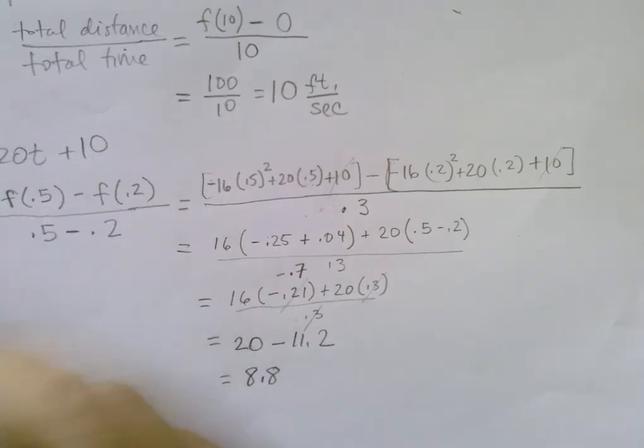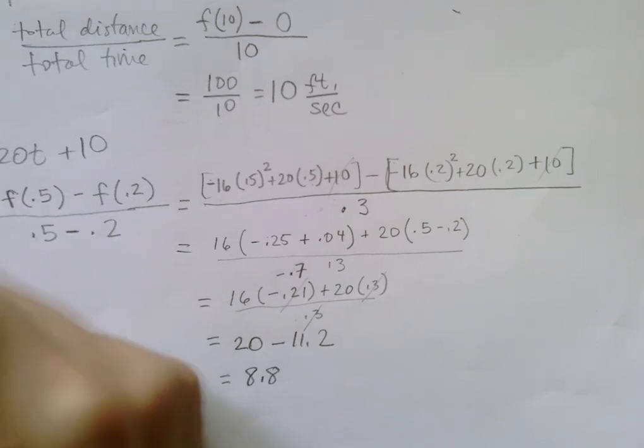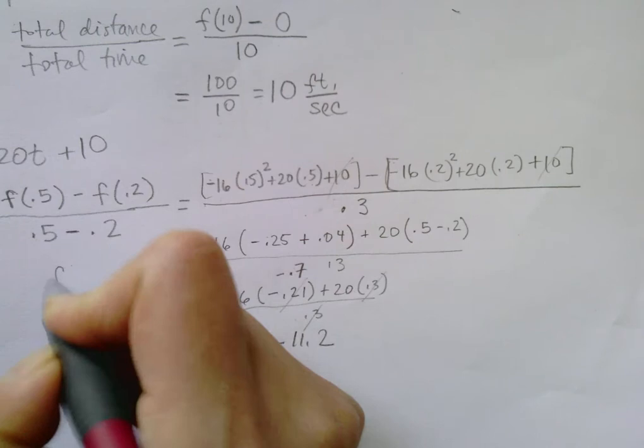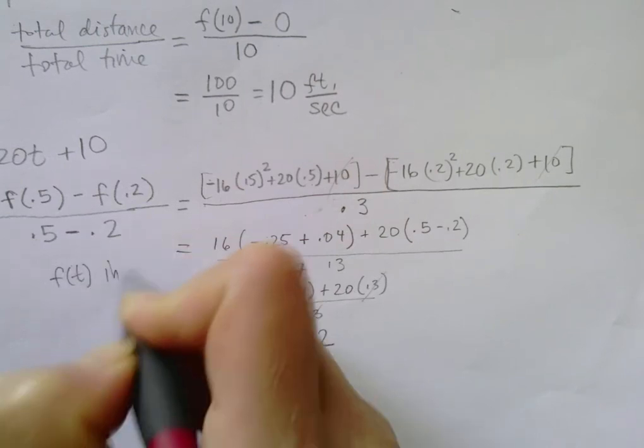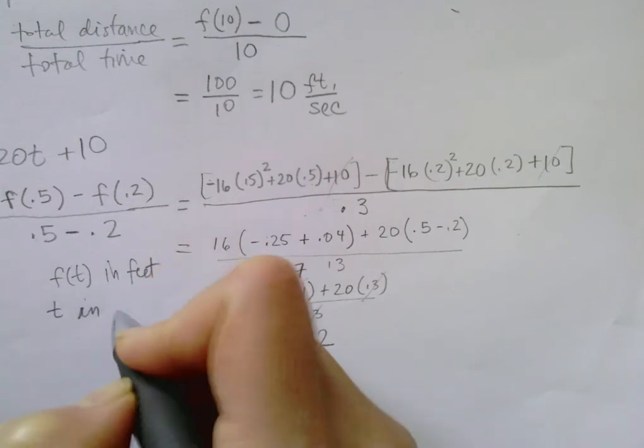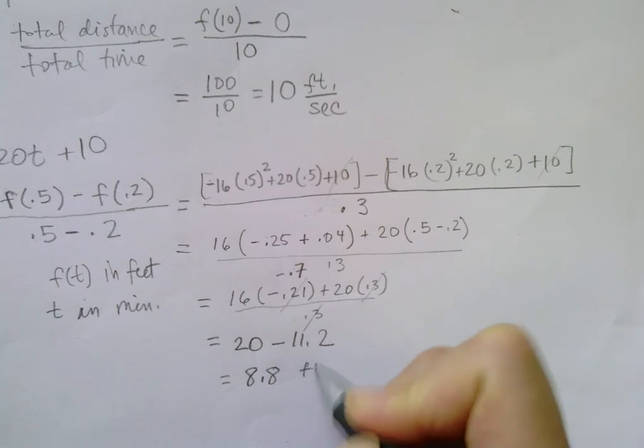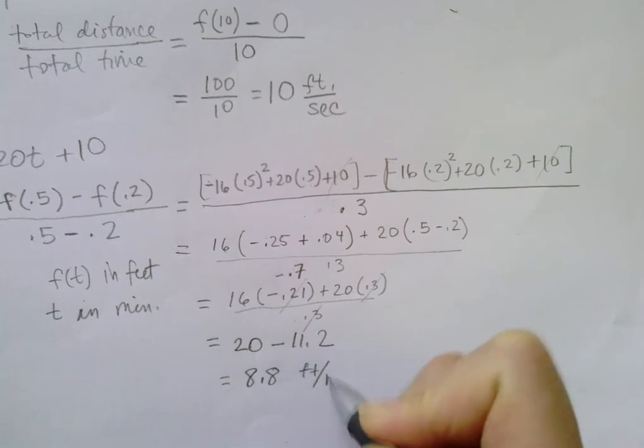Okay, and again I didn't give you the time interval or the distance units of measurement. So if this were feet, say f of t is given in feet and t in let's say minutes, this would be 8.8 feet per minute.